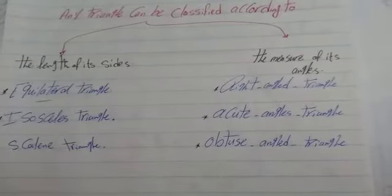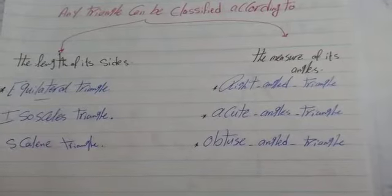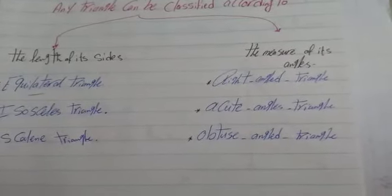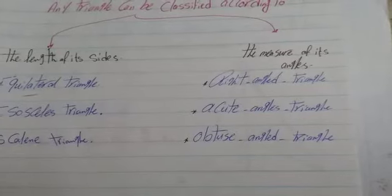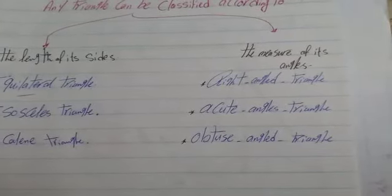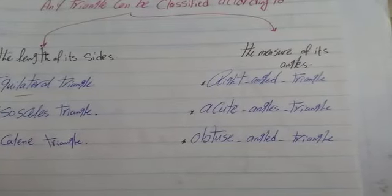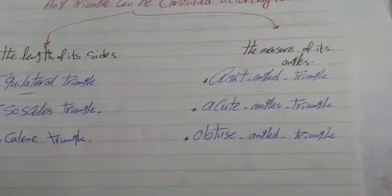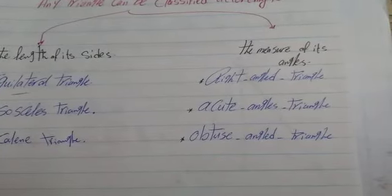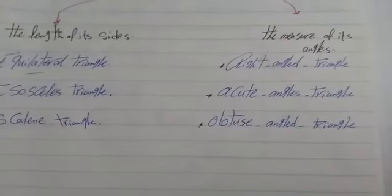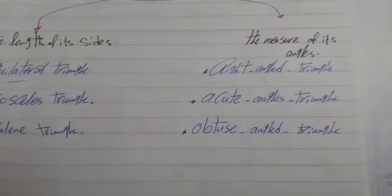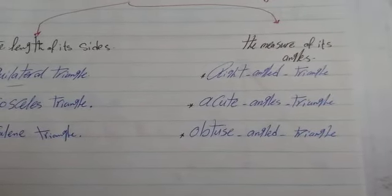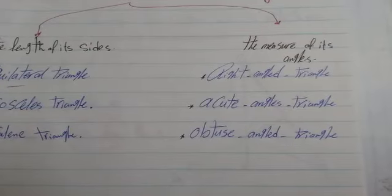The second classification is by the measure of its angles. A right angle triangle has one right angle and two acute angles. An acute angle triangle has three acute angles — each angle is less than 90 degrees. An obtuse angle triangle has one obtuse angle, where the measure is more than 90 and less than 180 degrees, and two acute angles.